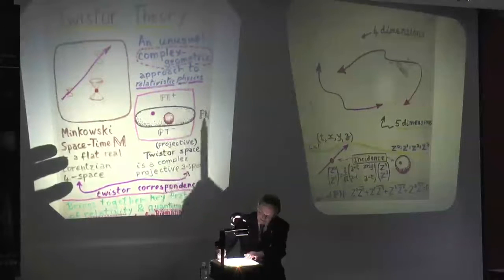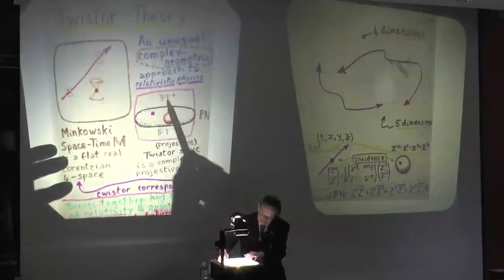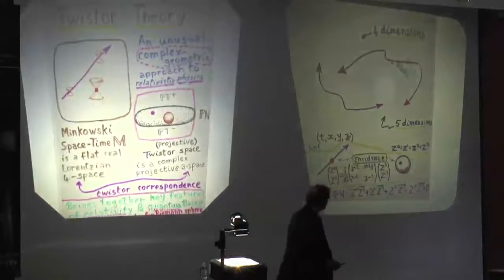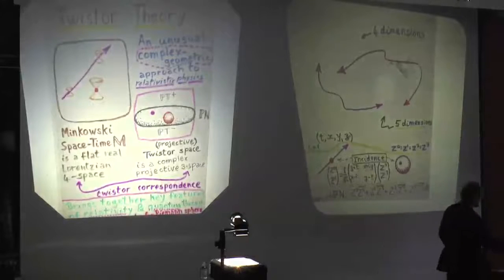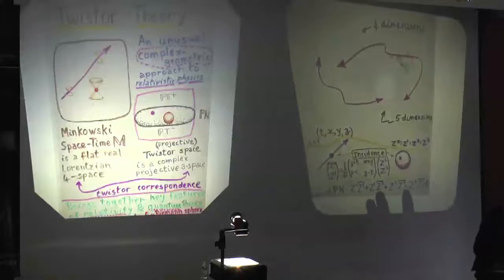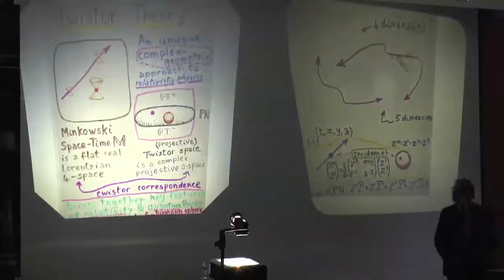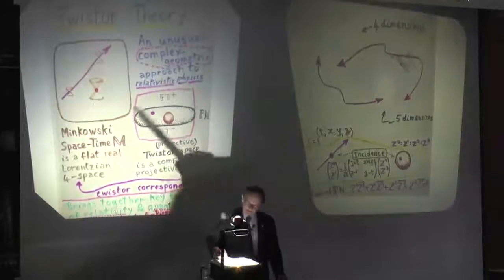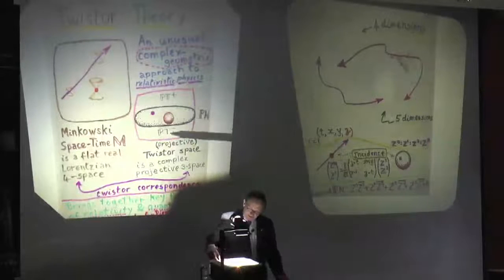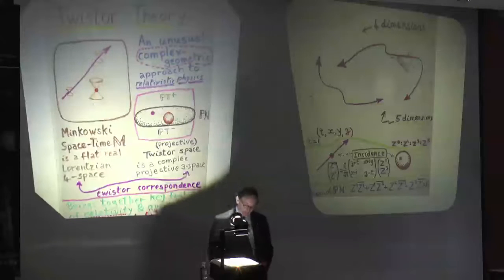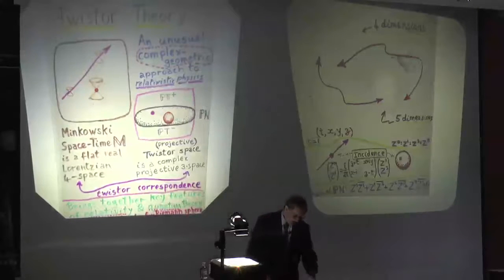T means twistor space. The T-plus ones are those for which the quadratic form at the bottom is positive, and the minus ones are those for which it is negative. If it's zero, then there's the null one. So we have now a space which is complex, with the whole thing being six real dimensions, but the null part in the middle has five real dimensions.